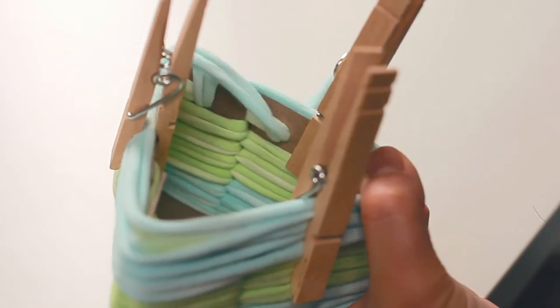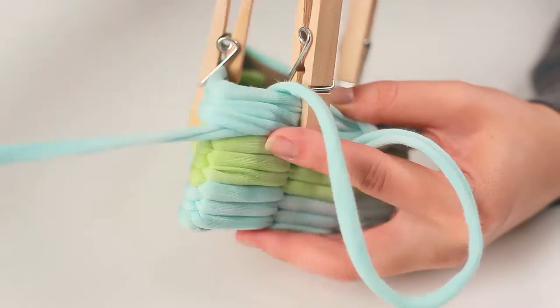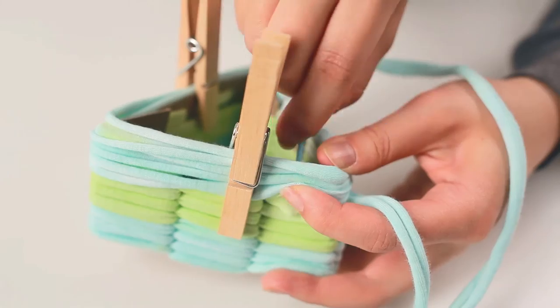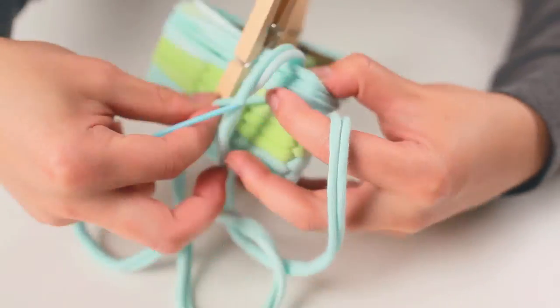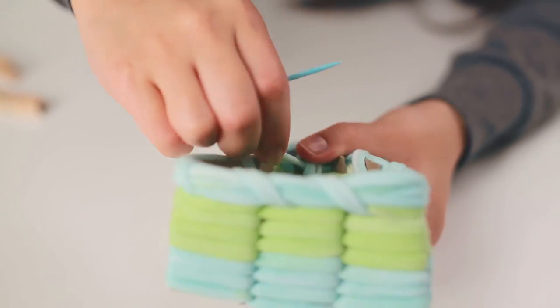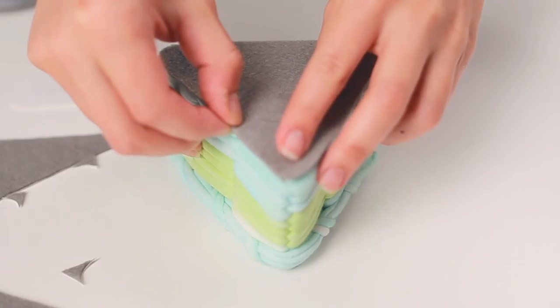Thread the yarn through all the holes from the inside out to secure the yarn in place. For the last step, cover the bottom with the felt sheet. Just cut the shape out, peel the back, and stick it on.